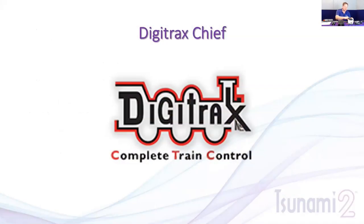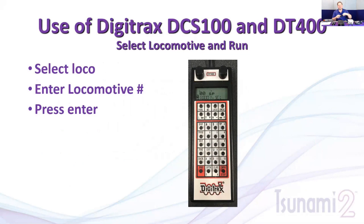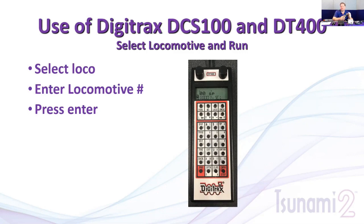Now we'll shut off the MRC and use the Digitrax system. I'm using a DCS-100 and a DT-402 series throttle. Much of this also applies to the 400 and 500 series throttles. Some hobbyists use operator throttles with limited features, which also limits function accessibility — you may only have 8 or 10 functions available. This is why I encourage getting better throttles, so you can access all functions without remapping or limiting yourself.